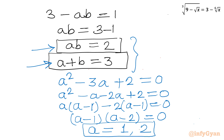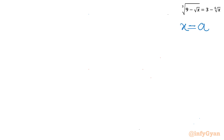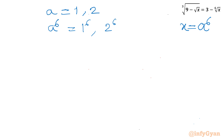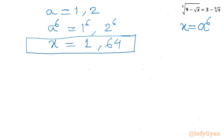Now a was our substitution where x equals a to the power 6. Taking both values: when a equal to 1, x equals 1 to the power 6 equals 1; when a equal to 2, x equals 2 to the power 6 equals 64. So x equal to 1 and x equal to 64 are our real solutions.